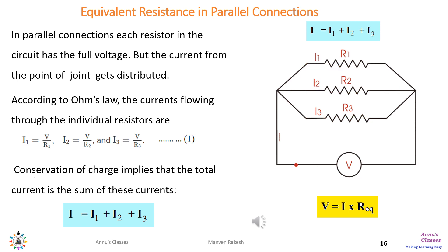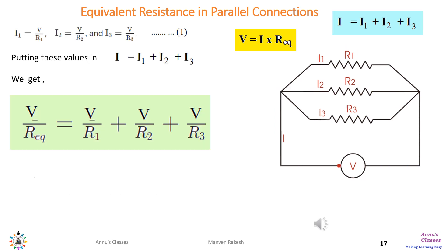Now we move to parallel connection. In a parallel circuit, the current divides amongst all components — the total current I divides into I1, I2, and I3 — but the voltage is the same across all three. Applying conservation of charge, I equals I1 plus I2 plus I3. Using Ohm's law: I1 equals V over R1, I2 equals V over R2, and I3 equals V over R3. Substituting, V over Re equals V over R1 plus V over R2 plus V over R3.